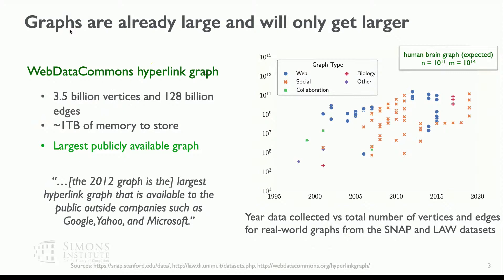Graphs are very big. One graph I'll focus on throughout this talk is the Web Data Commons hyperlink graph — a graph with 3.5 billion vertices and 128 billion directed edges, where a webpage with a hyperlink to another webpage creates a directed edge. Storing this graph using compressed sparse row format requires about a terabyte of memory for both in-edges and out-edges. This is the largest publicly available graph today, though people are working on bigger ones, and companies already have graphs with trillions of edges. This plot shows the exponential growth in graph size over the years.